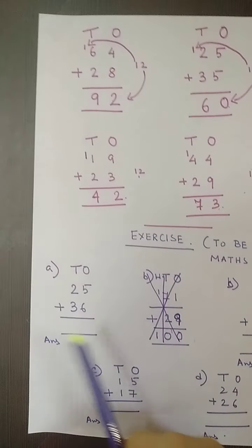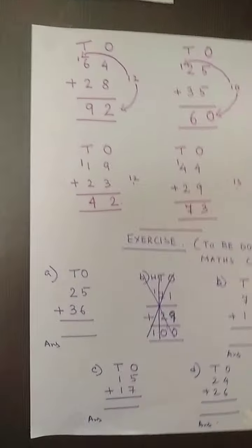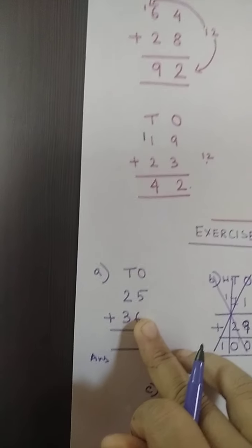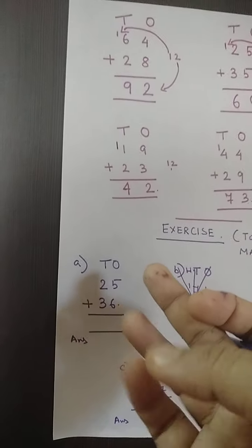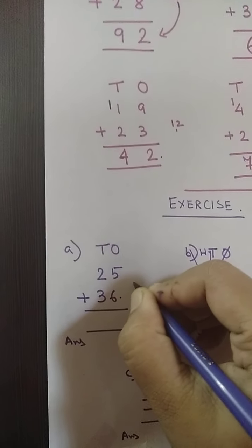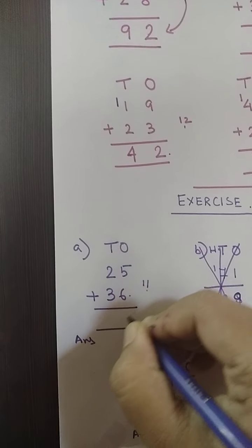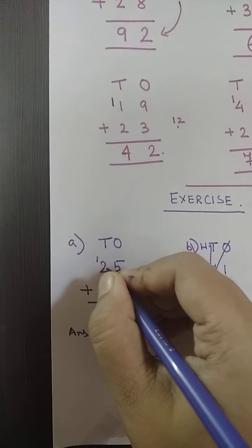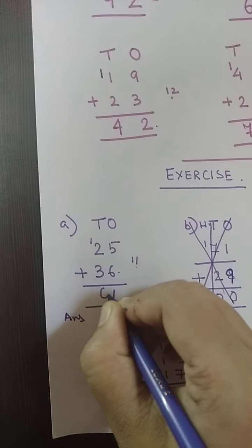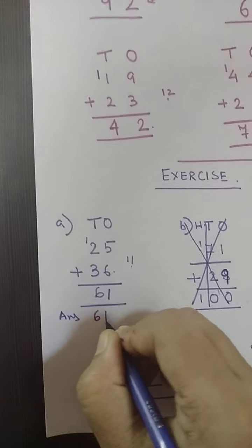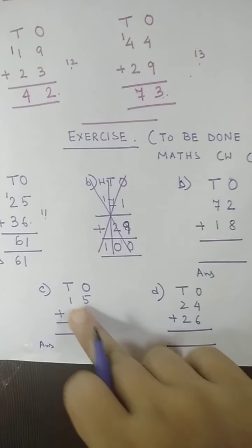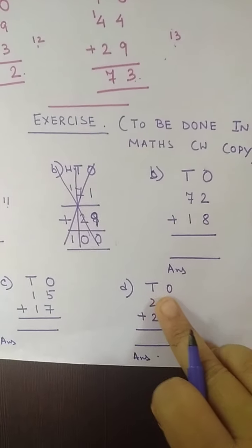Let me show you and please try to do with me. This is 36 plus 25 — 6 plus 5 gives 7, 8, 9, 10, 11. My answer is 11, so I write 1 here in the ones place, and another 1 I write here carried to the tens. Then 3 plus 2 is 5, and 5 plus 1 is 6. So my answer is 61.